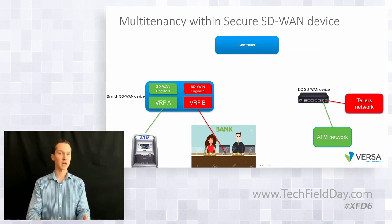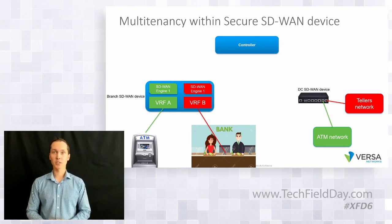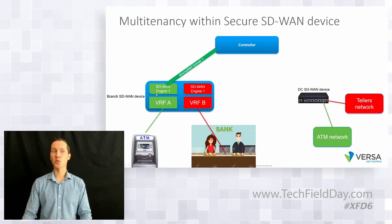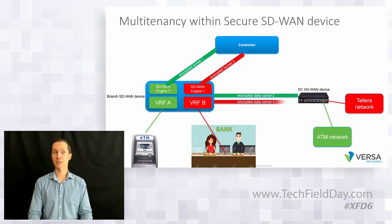It should have either different routers, different encryption, or a different network — it needs to be separated from everything else. With the introduction of multi-tenancy in Versa networks, we do multi-tenancy not only on the management plane but also on each individual device. We can run multiple instances of the SD-WAN engine on each physical device on the edge, and we can run VRFs attached to that specific control plane instance to build independent SD-WAN tunnels to remote locations.